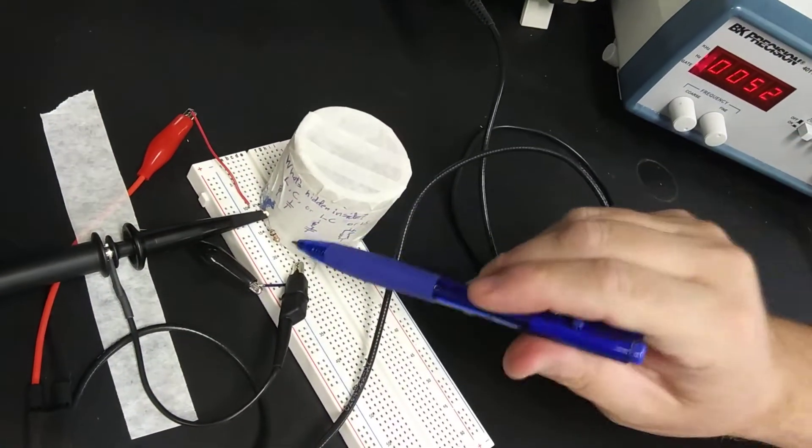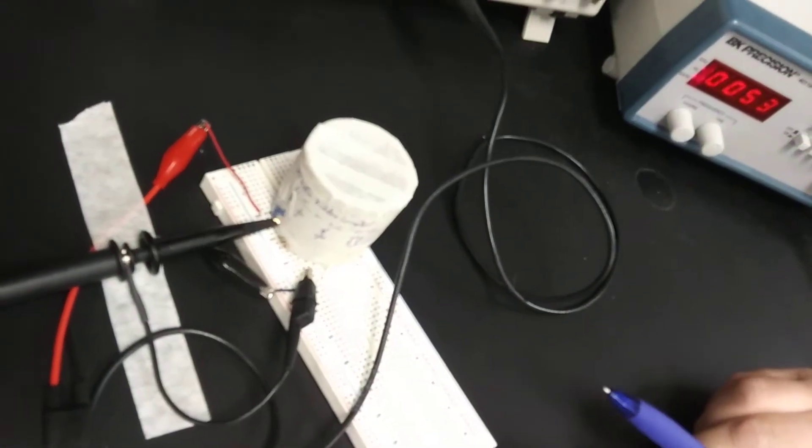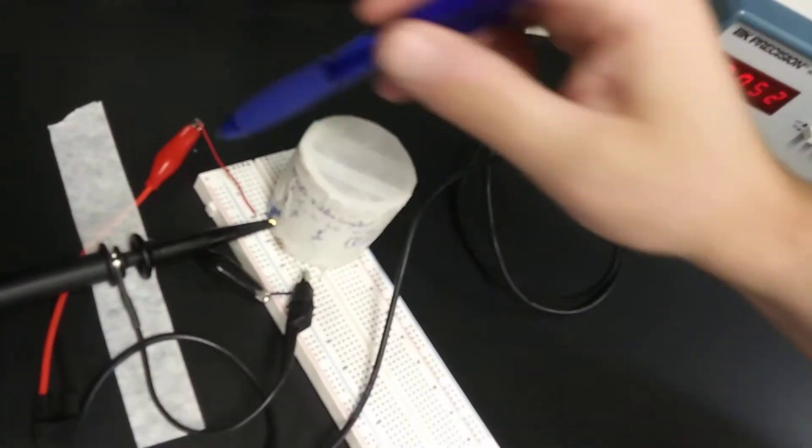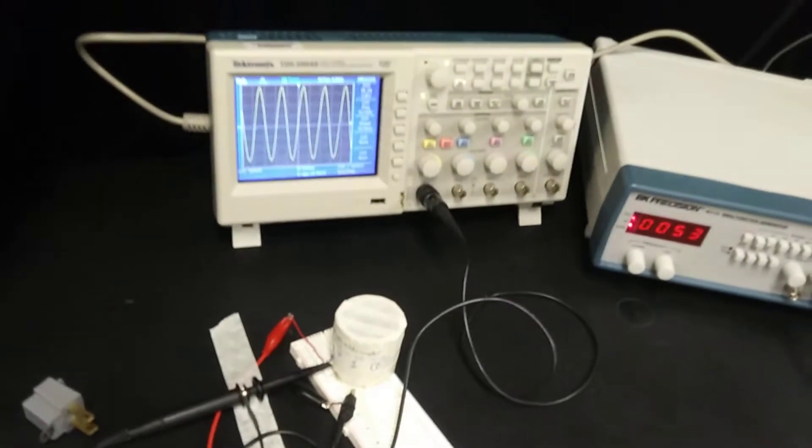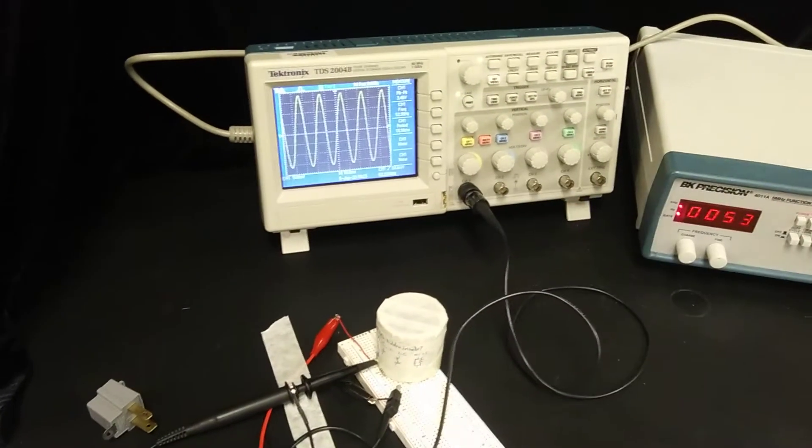These two objects, the resistor and the mystery object, are in parallel. I've also put a function generator across that, and I'm measuring the voltage across this resistor. So on the screen you can see this is the voltage across the resistor.